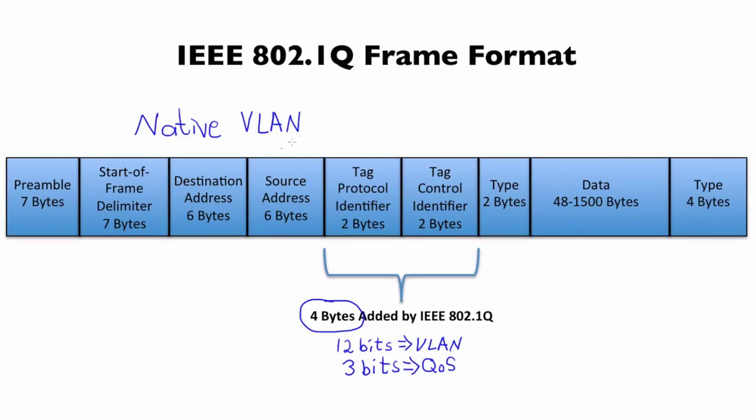A native VLAN is not tagged. There is no tag on our native VLAN that flows over a .1Q trunk.